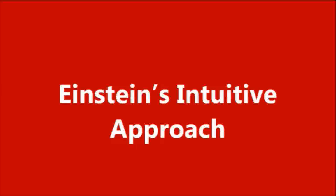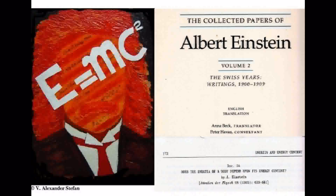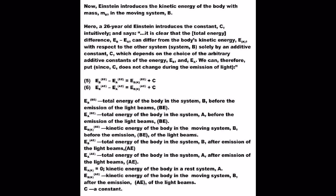Einstein's intuitive approach. Einstein introduces the kinetic energy of the body with mass M_B in the moving system B. A 26-year-old Einstein introduces the constant C intuitively, and says: it is clear that the total energy difference E_B minus E_A can differ from the body's kinetic energy E_K with respect to system B solely by an additive constant C, which depends on the choice of the arbitrary additive constants of the energies E_B and E_A. We can, therefore, put, since C does not change during the emission of light. Einstein's 1905 papers are of an intuitive character, as if God spoke to him.